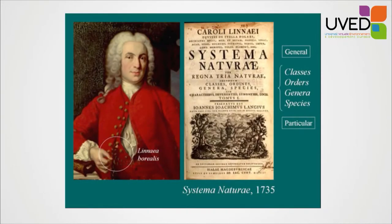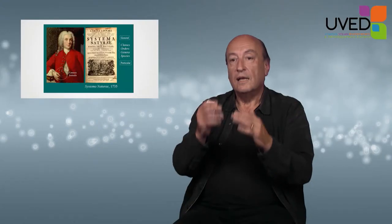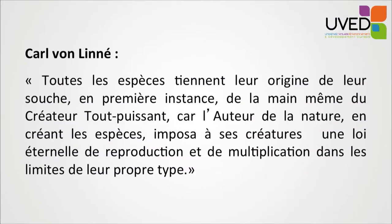There was a new science — systematics — that produces classification. The leading figure at the time was Carolus Linnaeus, who came up with the nomenclature for species and then the hierarchical system: classes, orders, genera, species, and within species, sub-species and varieties. Linnaeus built this on a clear theoretical foundation: all species find their origin from the hand of the creator, because species were created, and by creating species, our lord imposed an eternal law of reproduction and multiplication within their own type. So species were created, perennial, and could not be changed — a world created once and for all, totally stable.